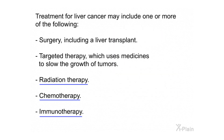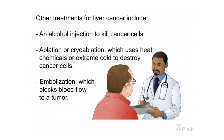Treatment for liver cancer may include one or more of the following: surgery including a liver transplant, targeted therapy which uses medicines to slow the growth of tumors, radiation therapy, chemotherapy, and immunotherapy. Other treatments include an alcohol injection to kill cancer cells, ablation or cryoablation which uses heat, chemicals, or extreme cold to destroy cancer cells, and embolization which blocks blood flow to a tumor.